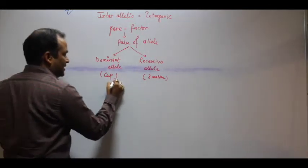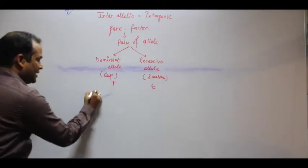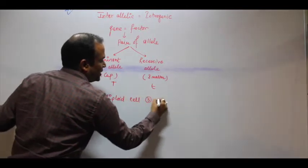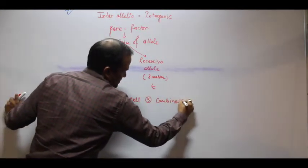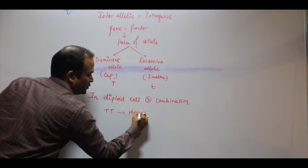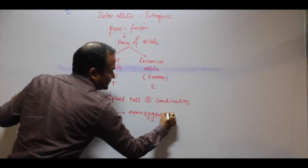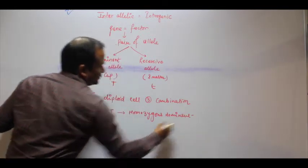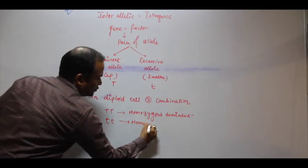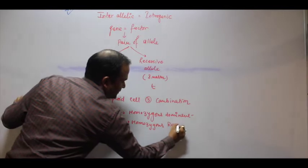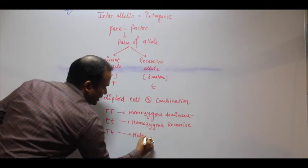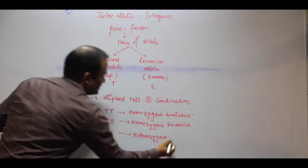For example, capital T or small t. In a diploid cell, three combinations can exist. Either they are found in capital T capital T condition - homozygous dominant, small t small t - homozygous recessive, and capital T small t - heterozygous. This is what's possible in interallelic.